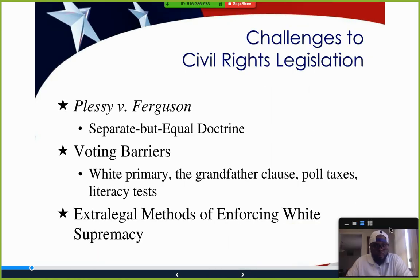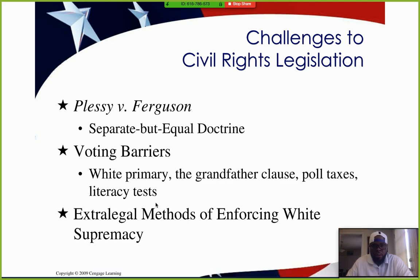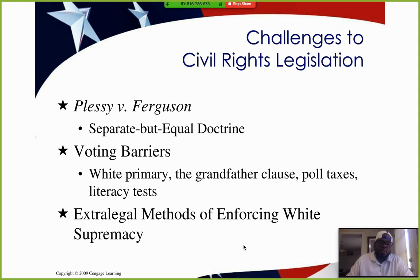The court case that ended Reconstruction fully was Plessy v. Ferguson, which created the 'separate but equal' doctrine. Voting barriers included white primaries, grandfather clauses, poll taxes, and literacy tests. Black codes became Jim Crow laws. Extra-legal methods of enforcing white supremacy also emerged, tied to the 13th Amendment's loophole that slavery was ended except as punishment for crime.